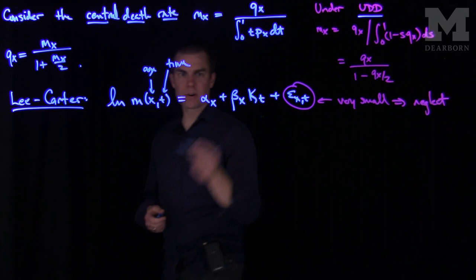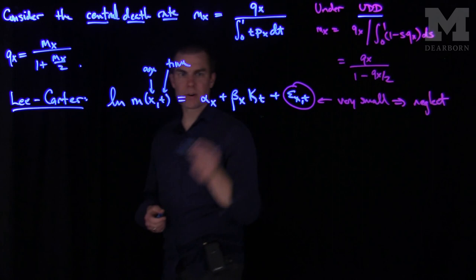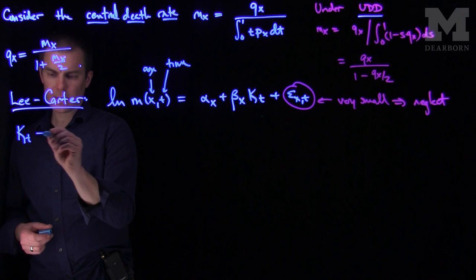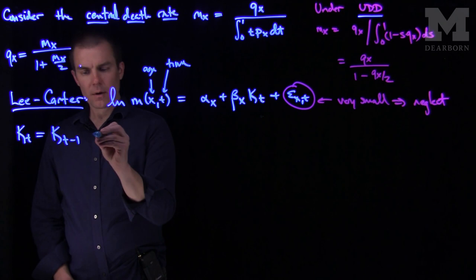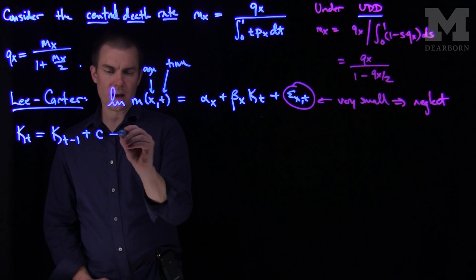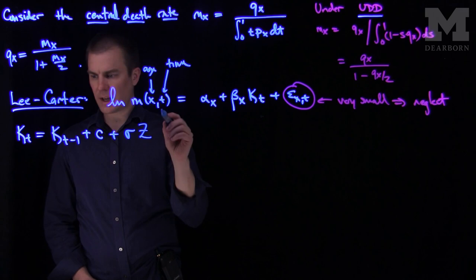And how is this kt, this random variable kt defined? It's defined by the following recursion: kt equals kt minus 1, the previous term in the sequence, plus a drift c, which is uniform throughout all timescales, and then plus sigma zt.